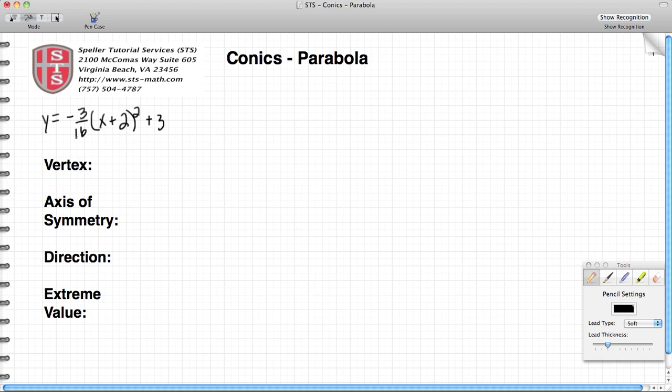We're going to answer some basic questions that normally help us to graph a parabola. So we're going to find the vertex, the axis of symmetry, the direction of the parabola, and the extreme value of this particular problem starting with the equation that we have here.